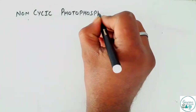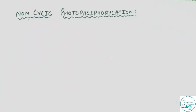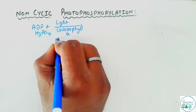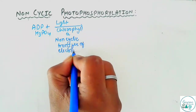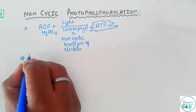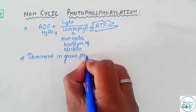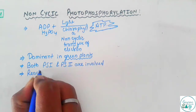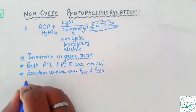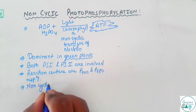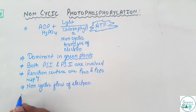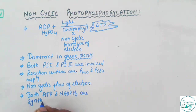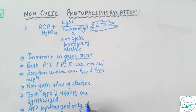Now we would talk about non-cyclic photophosphorylation. As the name suggests, the electron won't return back to its origin. Here, ADP along with inorganic phosphate in the presence of light and chlorophyll A would see the non-cyclic transfer of electrons to generate ATP. This type of event is more dominant in the case of green plants, and would involve both photosystems — Photosystem 1 and Photosystem 2 — with their reaction centers being P700 and P680 respectively. Non-cyclic flow of electrons occurs, and hence the name non-cyclic photophosphorylation. Here, both ATP and NADPH2 are synthesized, with ATP being synthesized only once during this reaction.